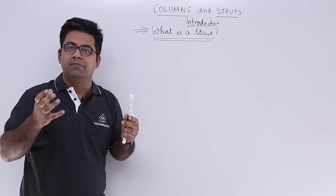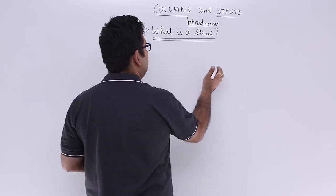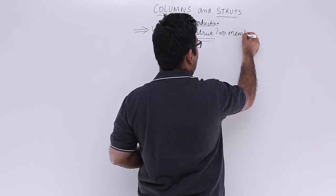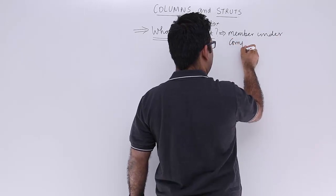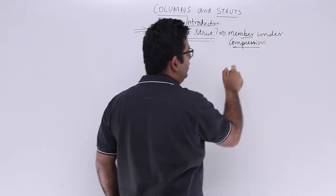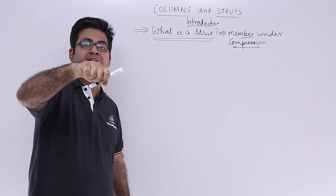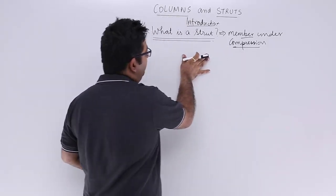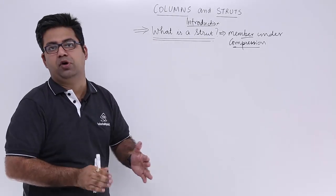Well, a strut is a member which is under compression load. So it's a member under compression. You can have any kind of orientation for a strut—it can be vertical, horizontal, inclined. As long as you have compressive load being pressed upon a member, it is always called a strut.